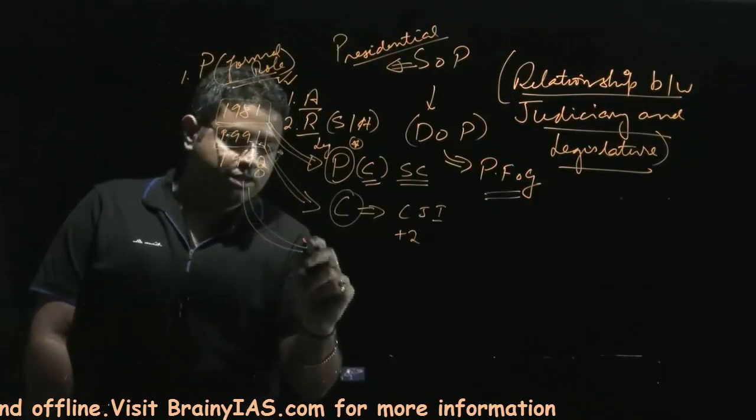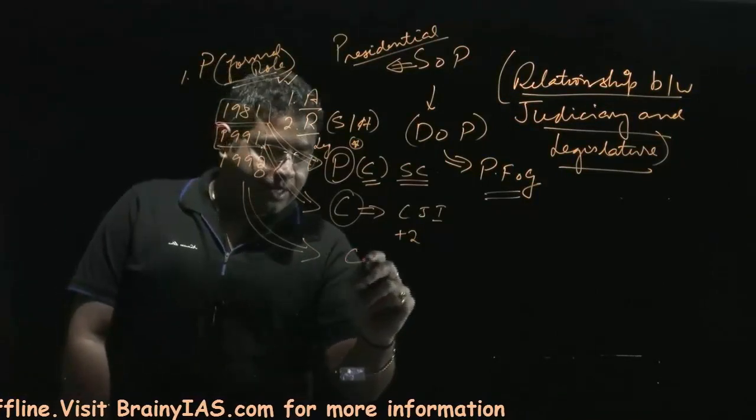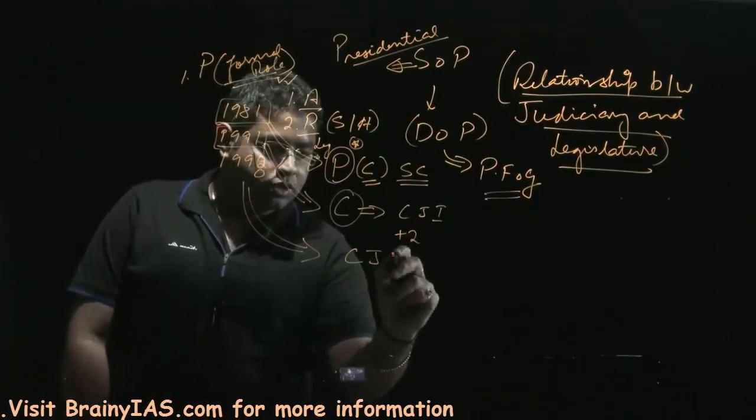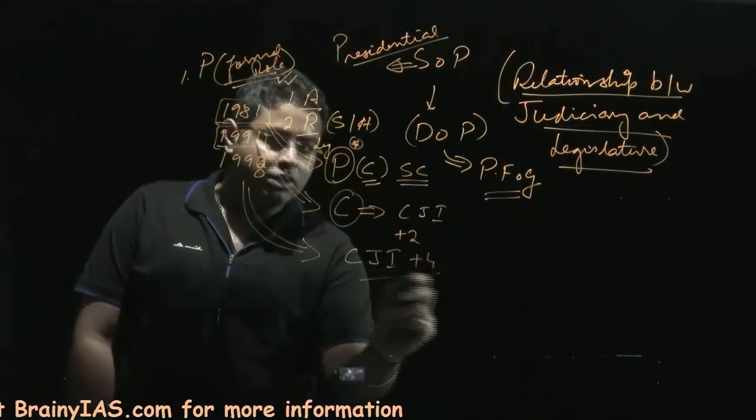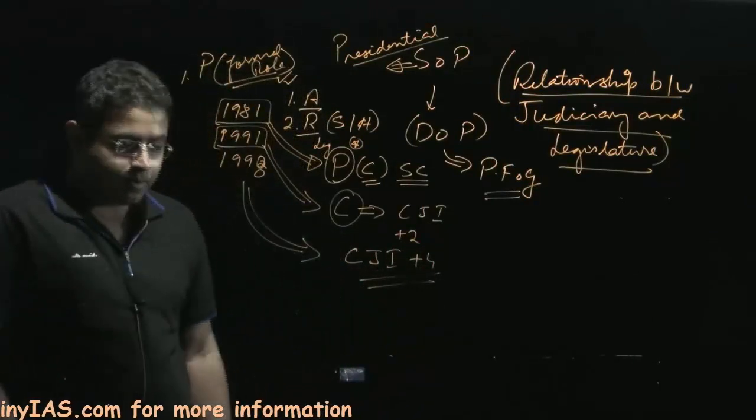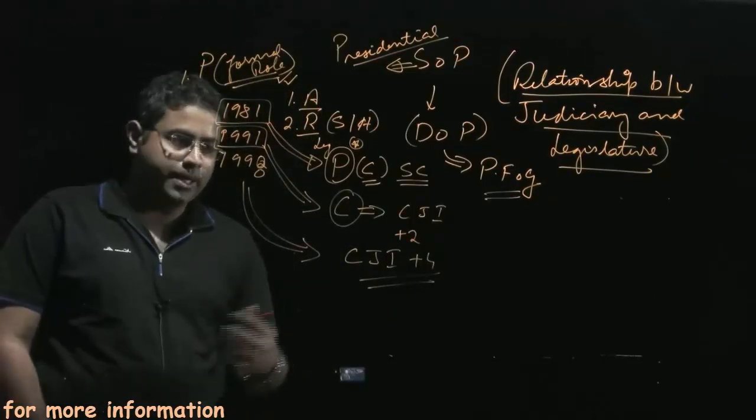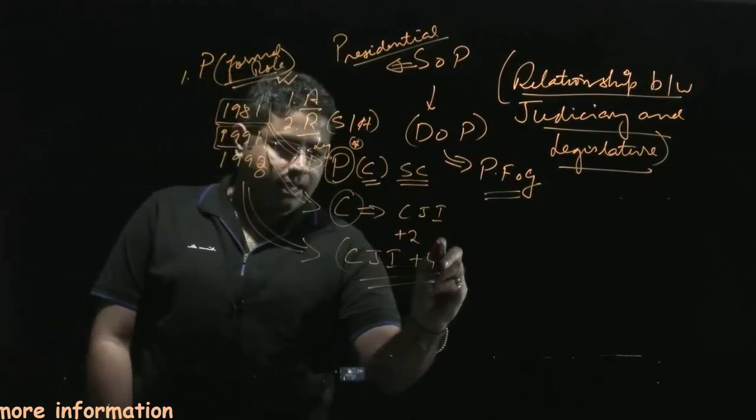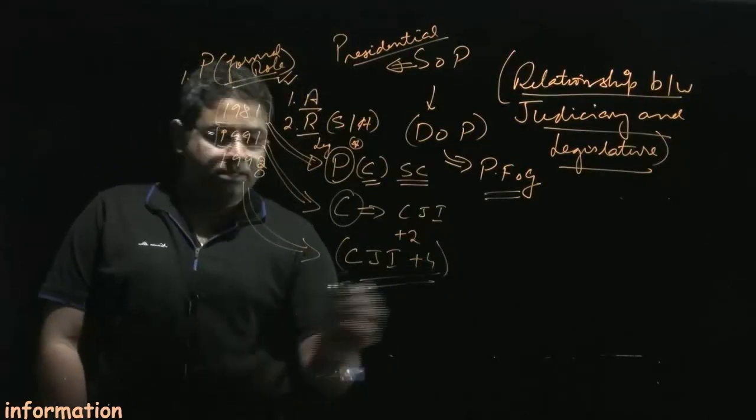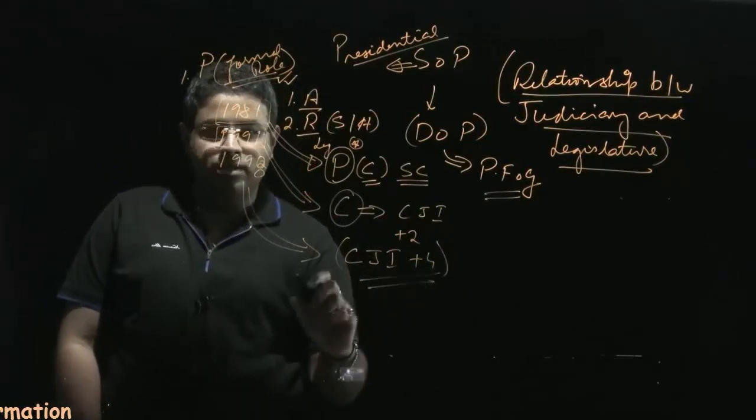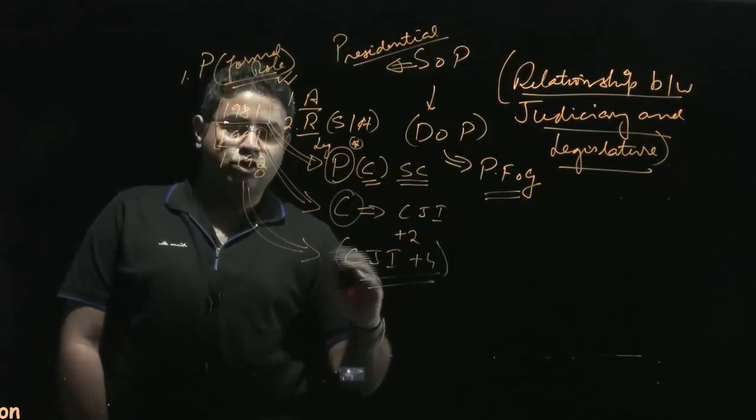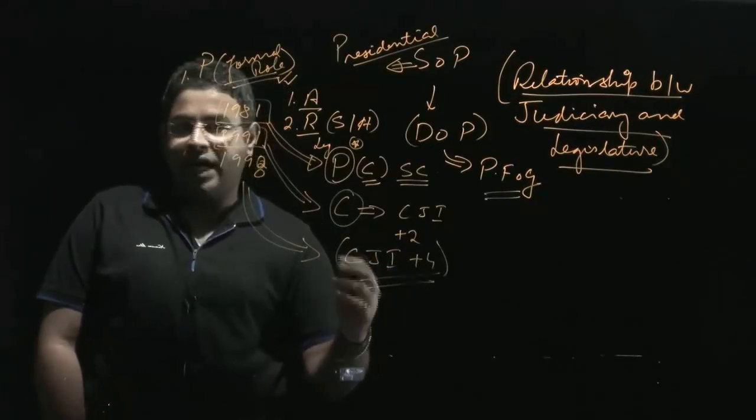In the third judges case, it was said that rather not only the two judges, but there should be four judges - Chief Justice of India and the four senior most judges of the Supreme Court should be actually consulted, and their concurrence should be taken. And this concurrence of the five judges should be by way of unanimity.